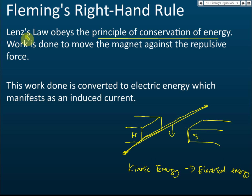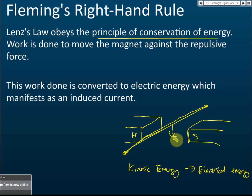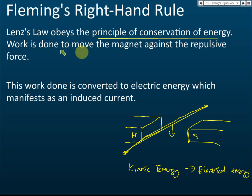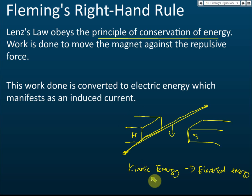The conductor must slow down because the kinetic energy must reduce as electrical energy increases. The kinetic energy is converted into electrical energy. That's why we say Lenz's law obeys the principles of conservation of energy — because Lenz's law says the current will flow in the direction to oppose and slow down the motion. Work is done to move the magnet against the repulsive force.